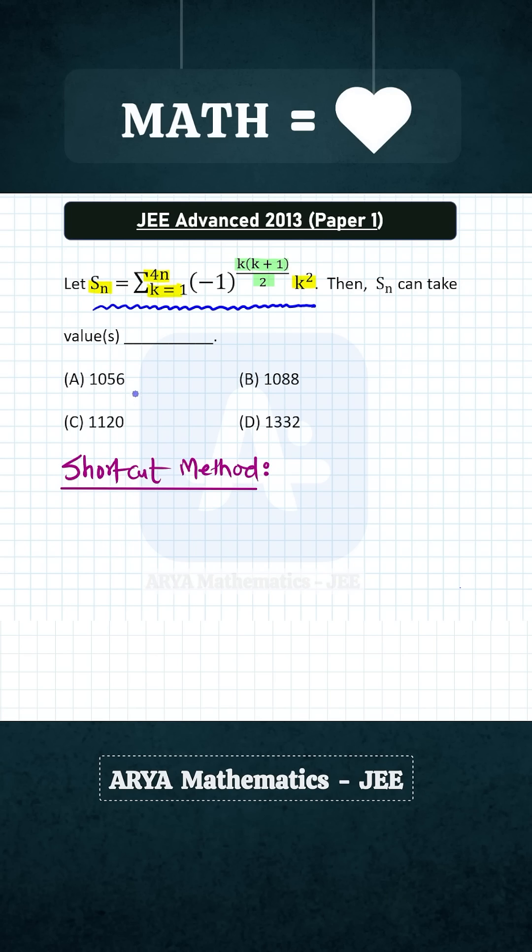Let us write the first few terms of this series to identify the pattern here. Basically this exponent k(k+1)/2, if this is odd number then we will get minus sign before k², and if this is even number then we will get plus k².